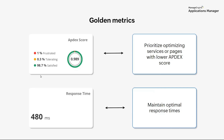Let's take a quick look at the golden metrics you need to track to ensure application performance is always on point. First, we have the Apdex score. Apdex scores quantify user satisfaction based on response times. By measuring how often response time meets or exceeds predefined thresholds, you can assert whether users are experiencing satisfactory interactions. Low Apdex scores indicate areas that need improvement, and you'll be able to prioritize optimizing services or pages that have lower Apdex scores compared to others.